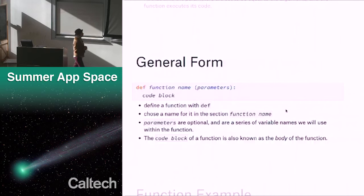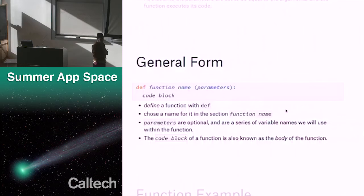The general form is: def — D-E-F, stands for define — then the function name, parentheses, any parameters, and then a code block. You define the function with def, you choose a name for it, parameters are optional and are a series of variable names we will use within the function, and then the code block of the function is also known as the body.